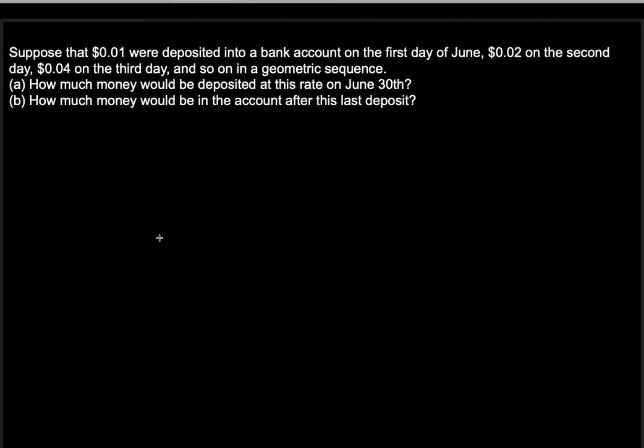Suppose that $0.01 were deposited in a bank account on the first day of June, $0.02 on the second day, $0.04 on the third day, and so on in a geometric sequence.